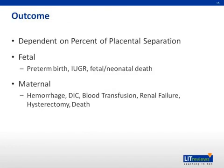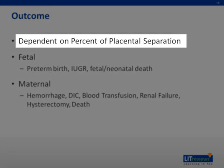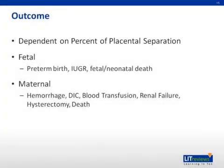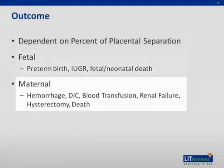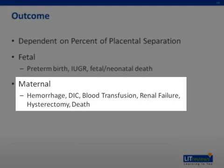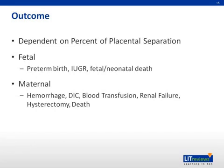Outcomes for placental abruption are widely varied and largely dependent on the degree of placental separation. In cases where there is minimal or marginal separation at term, there may be no adverse maternal or fetal effects. Chronic abruption can lead to preterm birth and intrauterine growth restriction, which carry a range of neonatal outcomes from NICU admission to permanent neurologic sequela or death. Maternal mortality is generally low, but morbidity can be high. Hemorrhage and DIC can lead to renal failure and multi-organ failure. Even when blood products are aggressively supplemented, ICU admission is common. Hysterectomy may also be performed if uterine bleeding cannot be controlled in any other way.